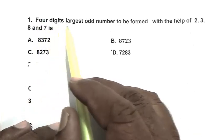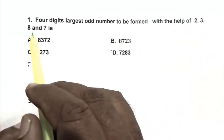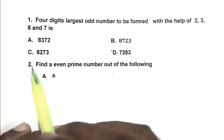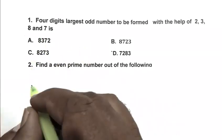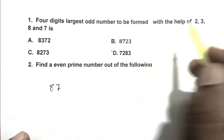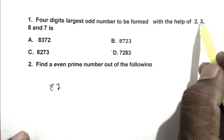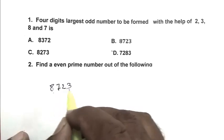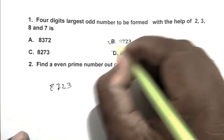Question number 1: Four digits largest odd number to be formed with the help of 2, 3, 8 and 7. We have to calculate the four digit largest odd number. We write the largest digit first, that is 8, then 7. To get an odd number, we write the least odd number at the end. So the answer is 8723. B is the right answer.